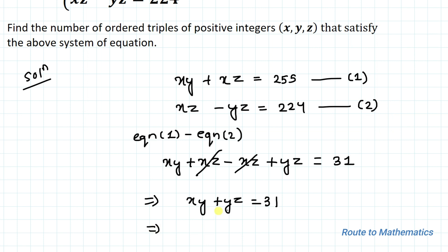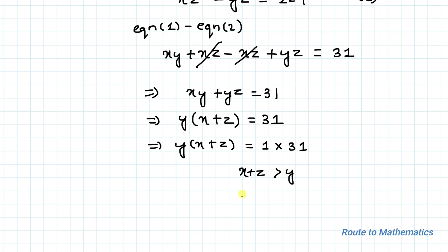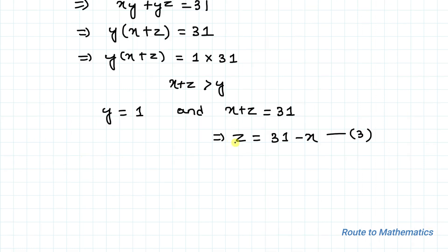Now let's take y as a common factor. So we have y·(x + z) = 31. Notice that 31 is a prime number, so we can write y·(x + z) = 1 × 31. In order to satisfy the equation with positive integers, we assume y = 1 and x + z = 31, which gives us z = 31 - x. Let's call this equation 3.